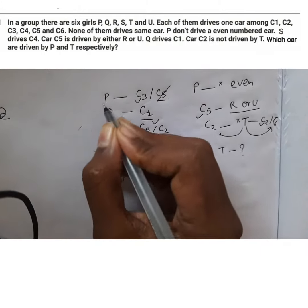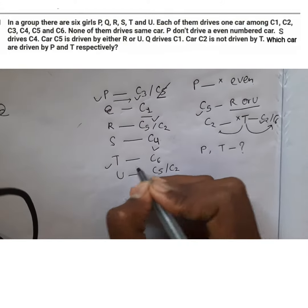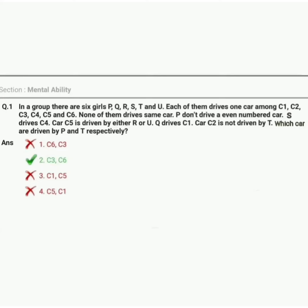This way, P is driving car C3 and T is driving car C6.